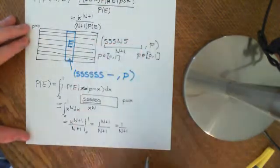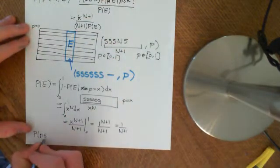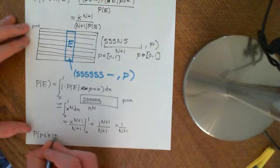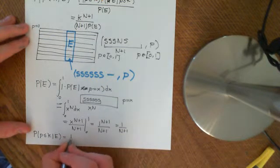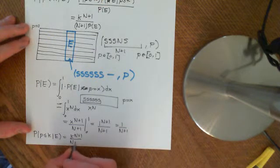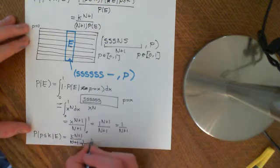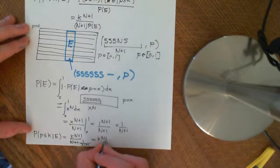So if we plug that final value into this formula, we get that the probability that P is less than or equal to K, given that E occurs, is equal to K to the N plus 1 divided by N plus 1, and then we have times 1 over N plus 1. So this and this cancel, and we just get that it's equal to K to the N plus 1.